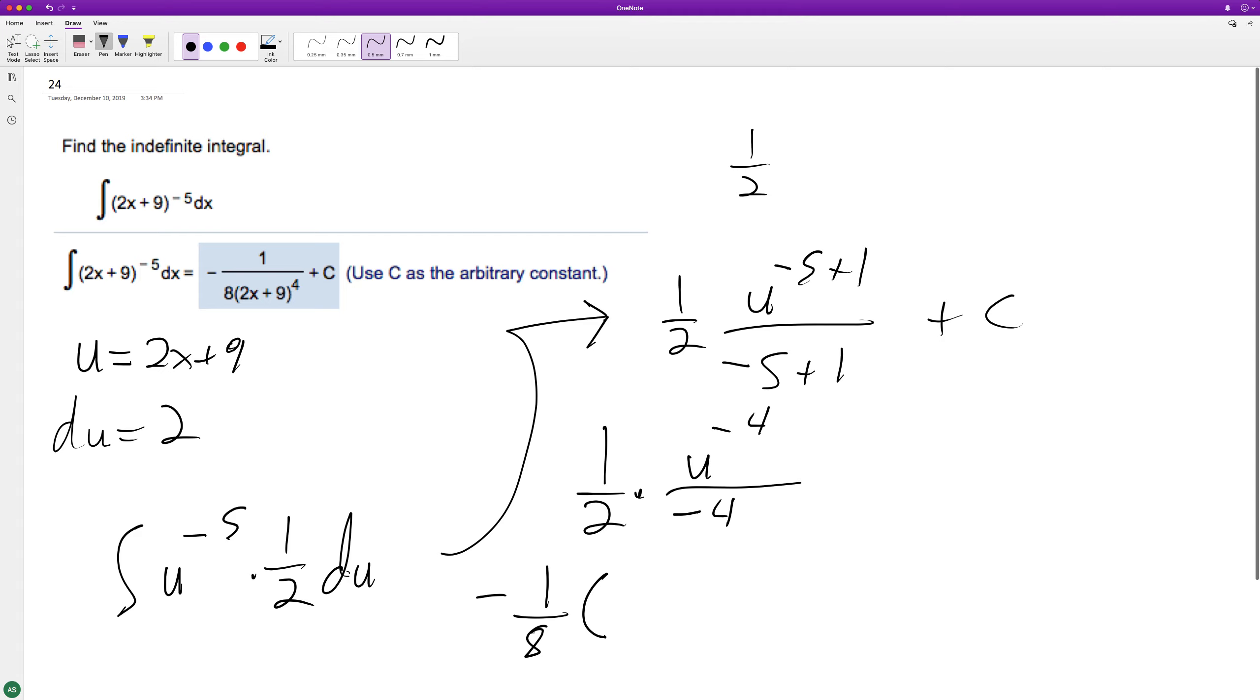And we can transfer back in for u. 2x plus 9 raised to the negative 4th, and then plus c. And if you want to take the extra step, you can put that on the bottom. So we have negative 1 over 8 times 2x plus 9 raised to the 4th plus c.